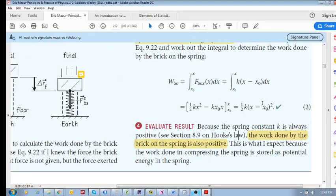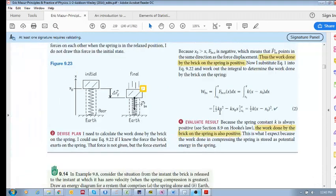So, because of the square, we know that whatever is inside of this bracket will be positive. So, the work done on the brick on the spring is positive. Okay? Which makes sense, because they both are in the same direction.